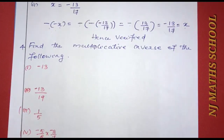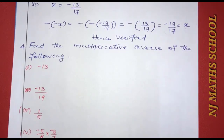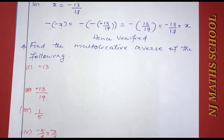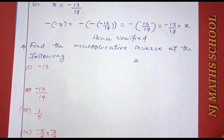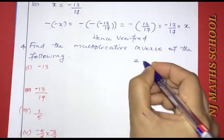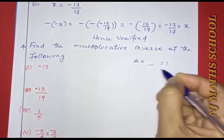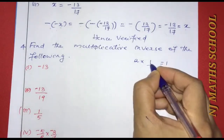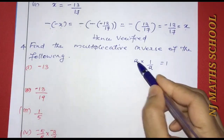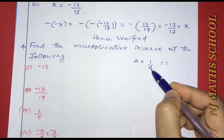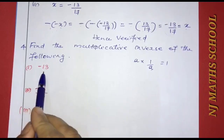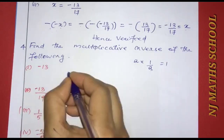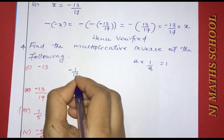Next question: find the multiplicative inverse of the following numbers. The multiplicative inverse is the reciprocal — the number you multiply by to get 1. For a number A, the multiplicative inverse is 1 by A. So for negative 13, the multiplicative inverse is 1 by negative 13, which is negative 1 by 13.